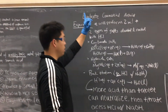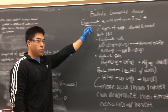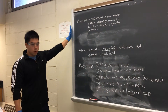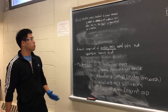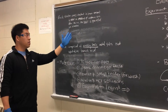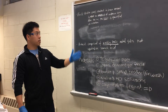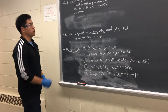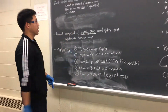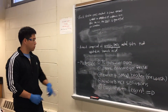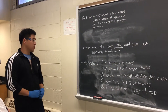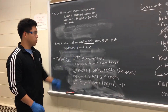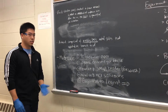Alright guys, today we're going to do the Evaluating Commercial Antacid Lab. Just a quick introduction. We're going to perform what's known as a back titration, and that's where we add an excess reactant in a known amount to a reactant of unknown concentration. After the reaction is finished, we're going to quantify the excess via a titration.